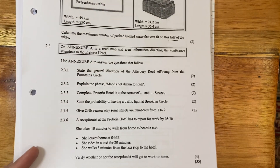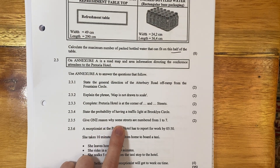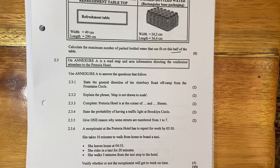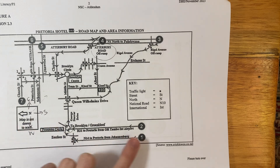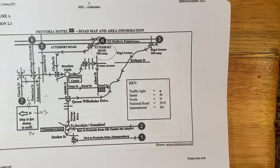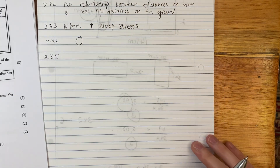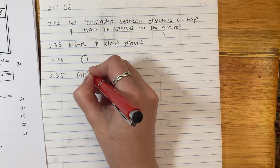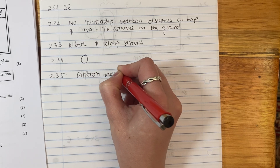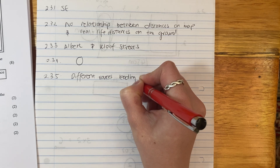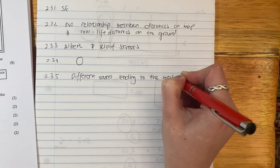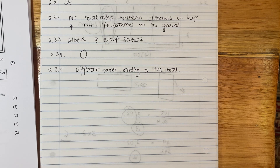Give one reason why some streets are numbered from 1 to 7. Originally when I saw this I thought it was a bit weird. But it's just different roads — different routes to get to the hotel. It's basically saying: take this route if you're coming from that direction, this route if you're coming from that direction. So we can just say: different routes leading to the hotel. That's the reason — the numbers represent different routes.